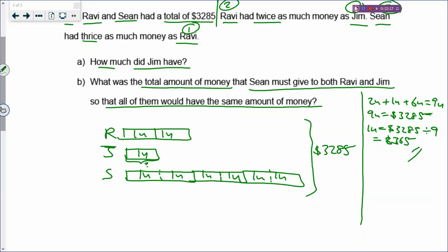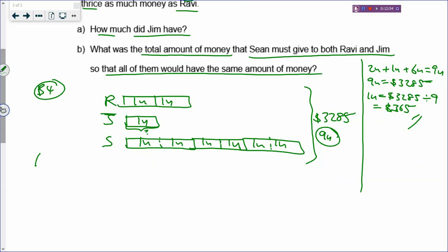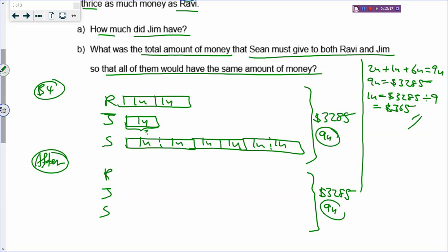Let's look at Part B: what was the total money that Sean must give to Ravi and Jim so that all of them have the same amount? That is like a before-and-after question. What is unchanged? The total money is still unchanged. They have altogether 9 units. So we draw a before-and-after model. In the after model, every one of them is going to have the same amount, and the total is still $3,285 with 9 units. You take 9 units and divide by 3 because everybody has equal amounts.